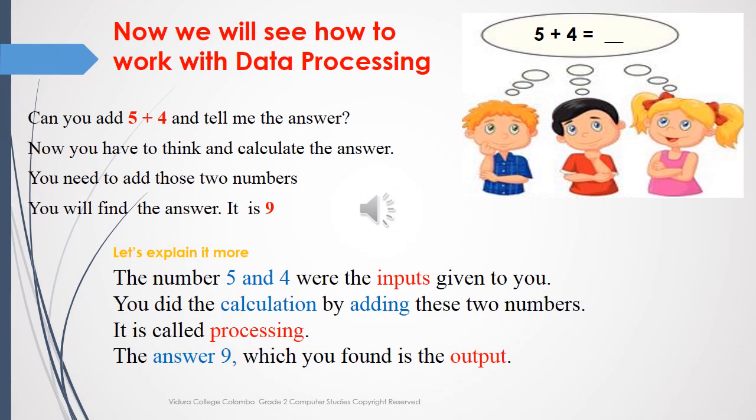Now we will see how to work with data processing. Can you add 5 plus 4 and tell me the answer? You have to think and calculate the answer. You need to add those numbers and you will find the answer — it is 9. The numbers 5 and 4 were the input given to you. You did the calculation by adding these two numbers; that is called processing. The answer 9 which you found is the output.